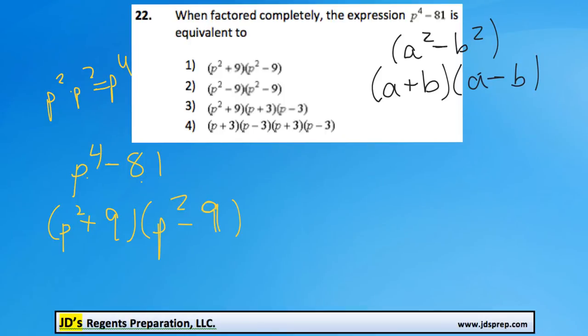We're not actually done. I know a lot of you might think that means option number 1 is the correct answer, right? Because that's what we have here. But we can factor further, because once again, we have a difference of squares, p squared minus 9.